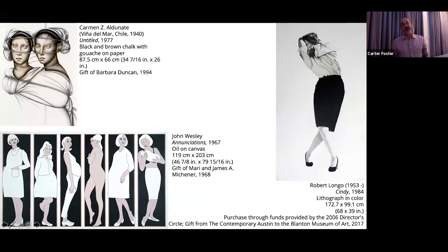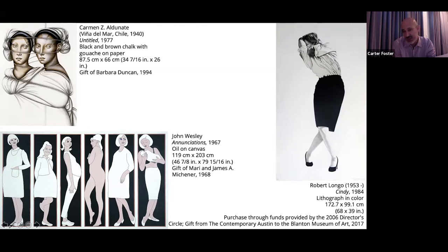Another group of works compares John Wesley, very much in the pop moment (shown in the lower left with Annunciations), with two artists of a different generation: Chilean artist Carmen Aldenate in the upper left, and Robert Longo on the right, associated with the Pictures Generation — a group of artists from the 1980s that used many pop strategies, interested in critiquing mass media using pop image aesthetics. The John Wesley piece — called Annunciations — may or may not have been intended as a political statement, but given what was going on in the 1960s, it can be read as such.